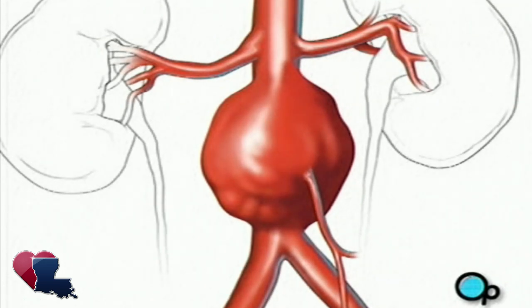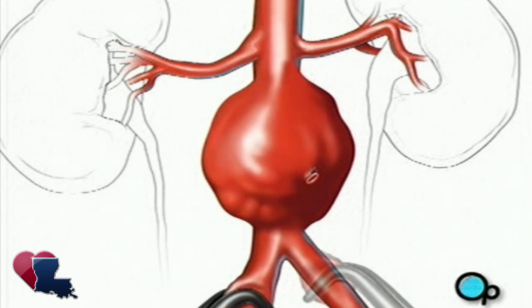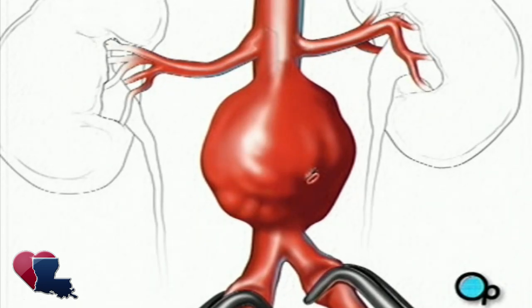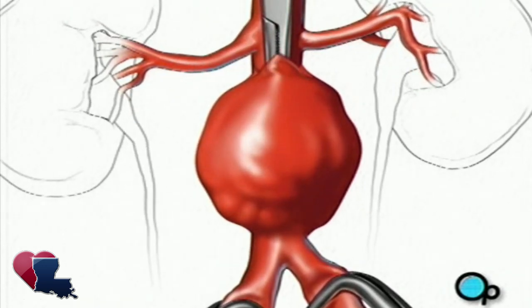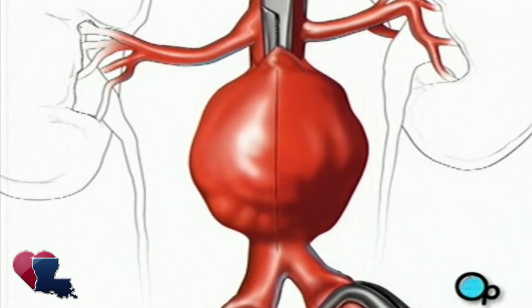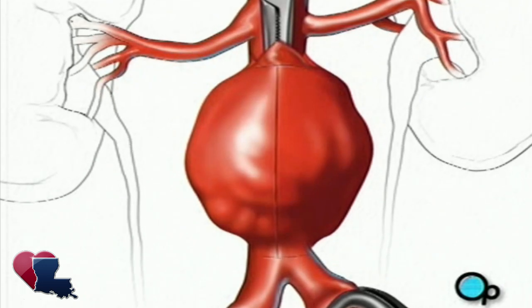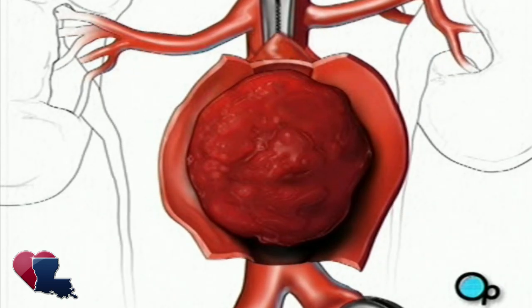Now your doctor can begin to remove the clot. First, he or she will apply clamps to each of the two arteries that branch away from the main artery, temporarily preventing blood from flowing to your legs. Next, your doctor will clamp the artery above the aneurysm. Once the blood supply has been shut off in this manner, your doctor will make a vertical incision in the artery wall and two small horizontal incisions to allow access to the damaged area. The blood clot can then be removed.